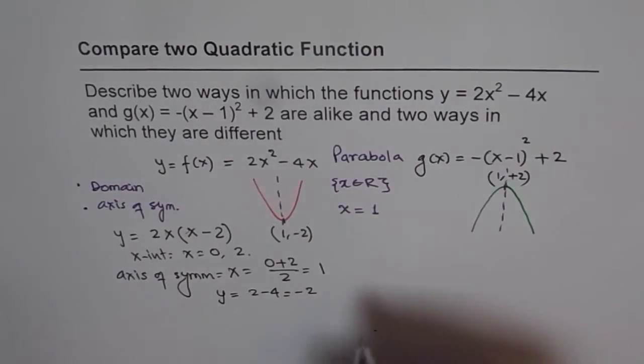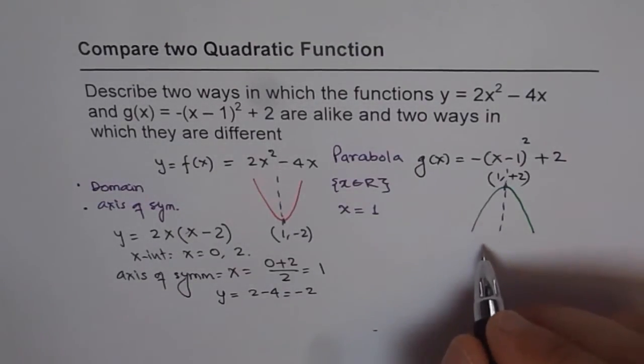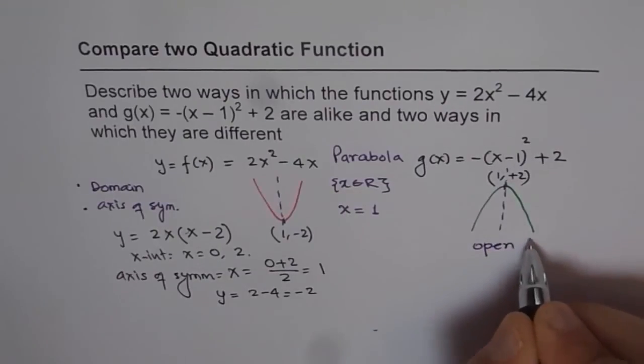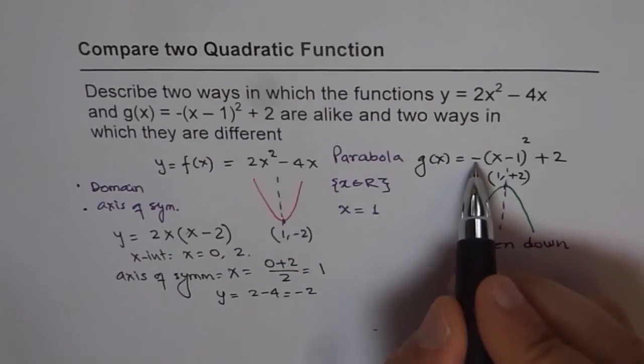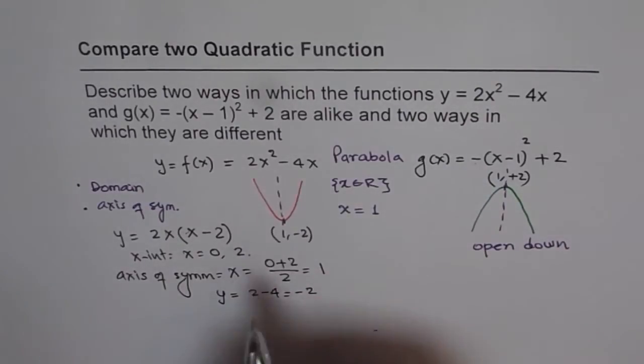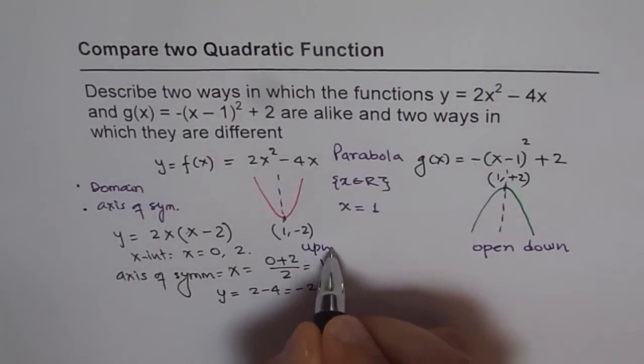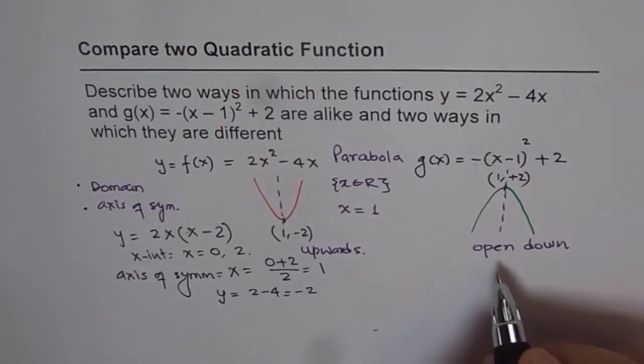Now as far as differences are concerned, we know it opens downwards. That is because leading coefficient is negative and this graph opens upwards. So that is one difference.